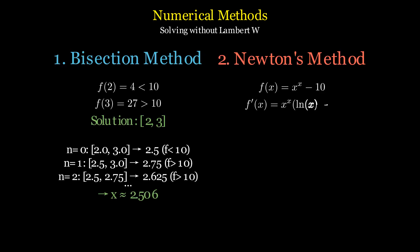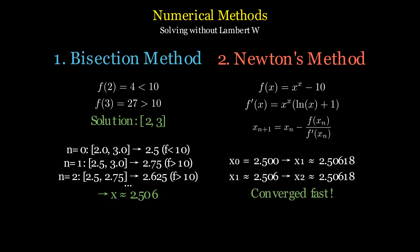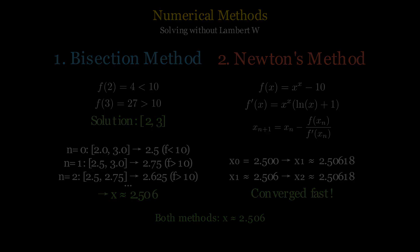Newton's method is faster. For f of x equals x to the power of x minus 10, we need the derivative and an initial guess. Starting with x naught equals 2.5, we iterate. Both methods converge to x as approximately 2.506, confirming our Lambert W solution.